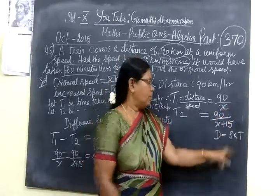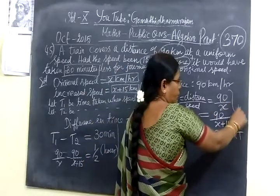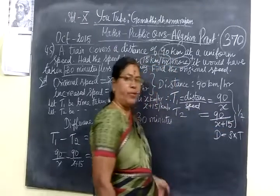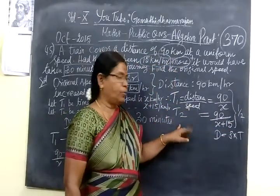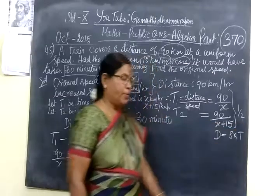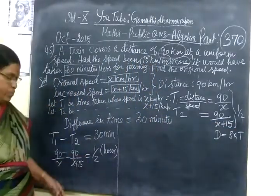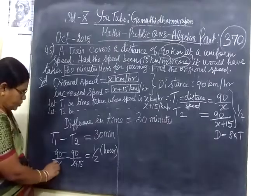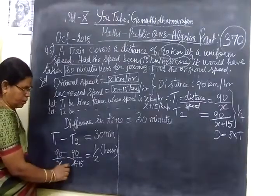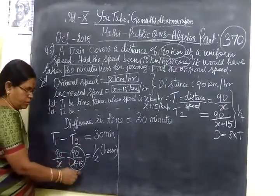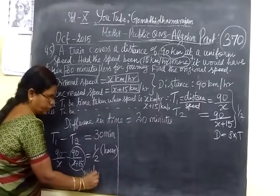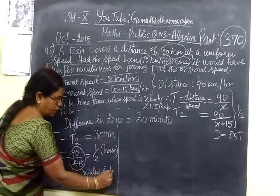The difference in time is half hour. So we are writing T1 minus T2 equal to half. We are writing the greater value first because this has more value.